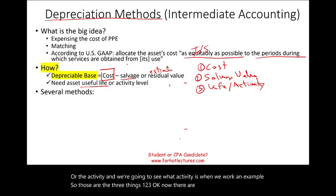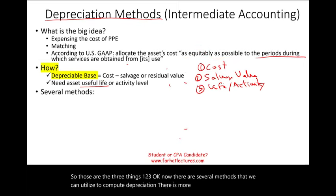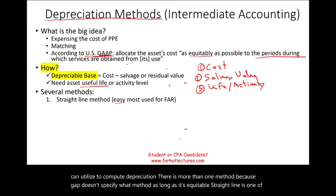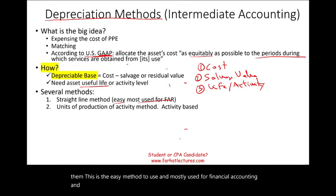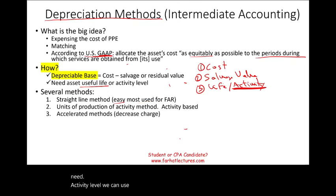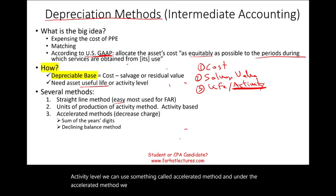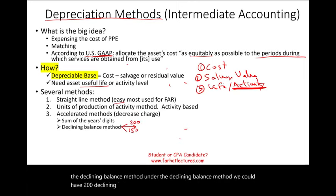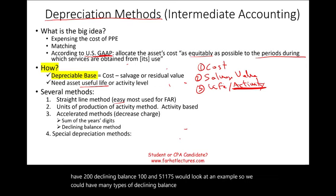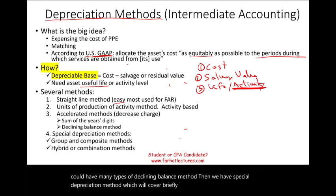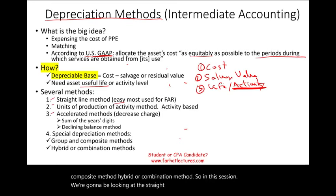There are several methods we can use to compute depreciation — more than one, because GAAP doesn't specify which method as long as it's equitable. Straight line is one of them — the easiest method, mostly used for financial accounting and reporting. Units of production, or activity method, is where we need the activity level. We can also use accelerated methods: under the accelerated method we have the sum of years digits and the declining balance method, which can be 200%, 175%, or 150% declining balance. There are also special depreciation methods, group and composite methods, and hybrid or combination methods. In this session, we're going to look at straight line, units of production, and the accelerated method.